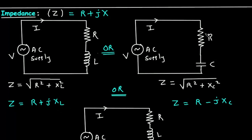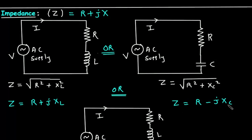If the load is a resistor and capacitor, the impedance equals the square root of R squared plus XC squared. This is in scalar form. In vector form, Z equals R minus J XC.